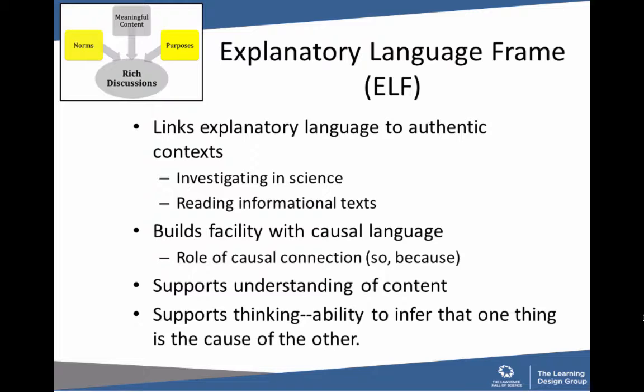We've been working with kindergartners and first graders using particularly these two words — 'because' and 'so' — and are finding that they're able to acquire and correctly use these words when talking about their science, what they know about science. In fact, it's oftentimes not until children are eight years old or older that they start using 'so' and 'because' accurately.